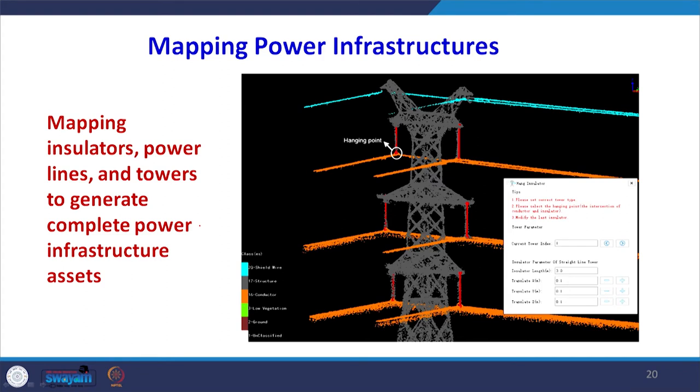Mapping power infrastructure is another key application. It is very difficult to physically visit each and every tower — both low and high tension towers. With this system, one can map insulators, power lines, and towers to generate a complete assets inventory, find defects, and plan repair, maintenance, or upgradation work. This kind of data is found to be very useful across multiple sectors.